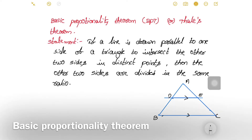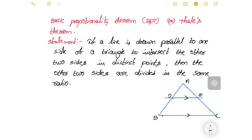Hi students, we are going to discuss the Thales theorem. Thales theorem is the Basic Proportionality Theorem, short form BPT. If a line is drawn parallel to one side of a triangle to intersect the other two sides in distinct points, then the other two sides are divided in the same ratio.